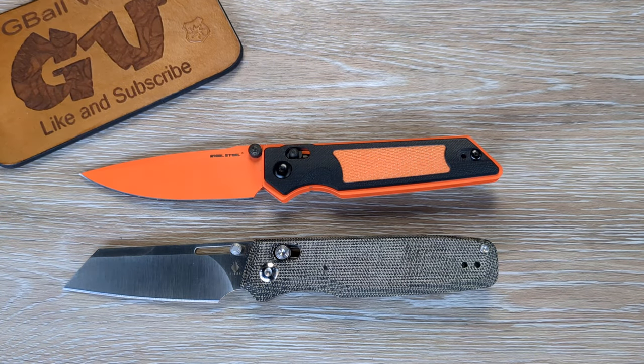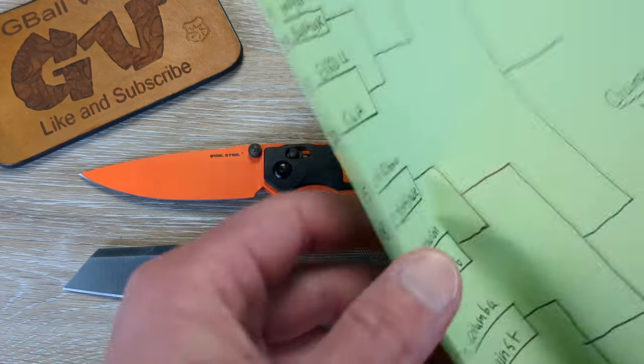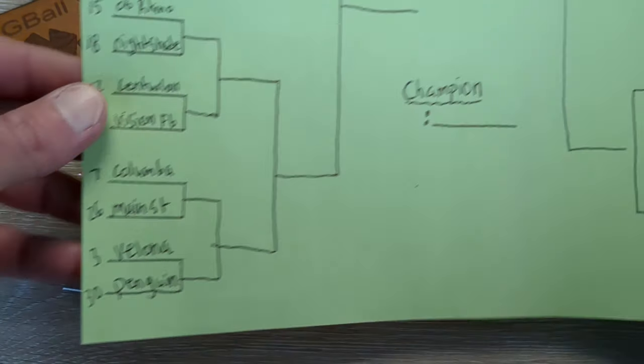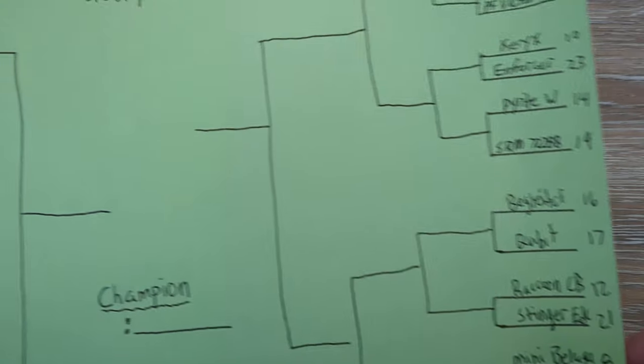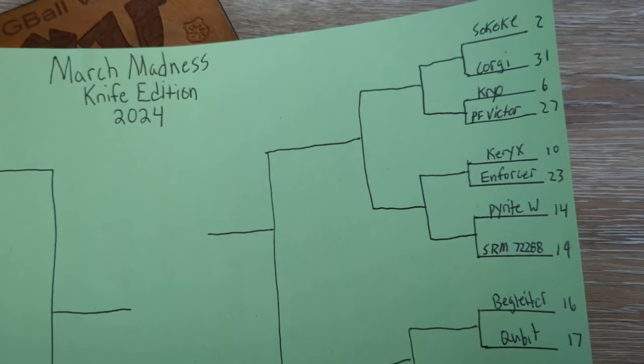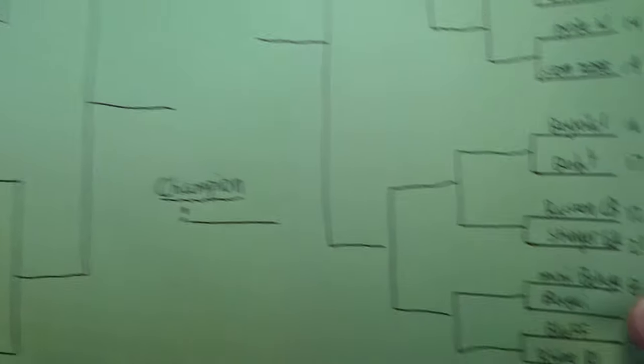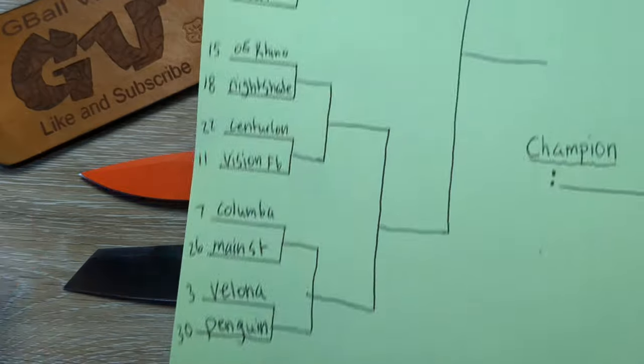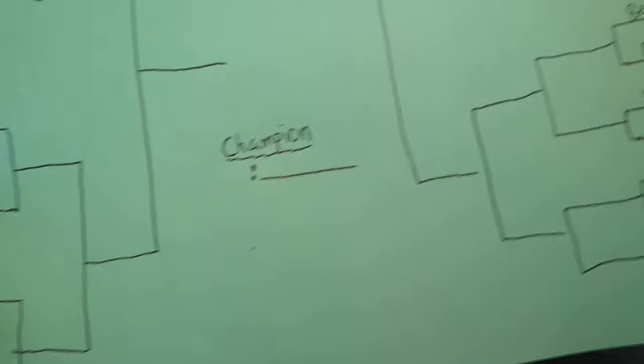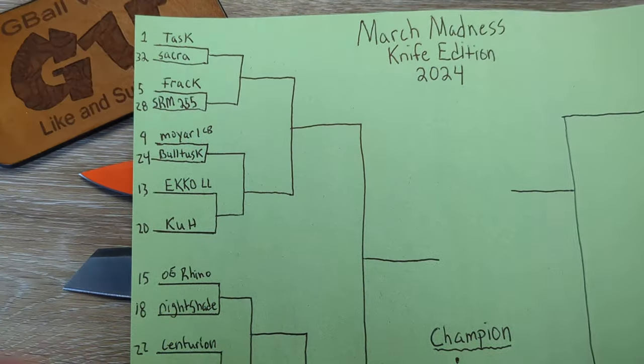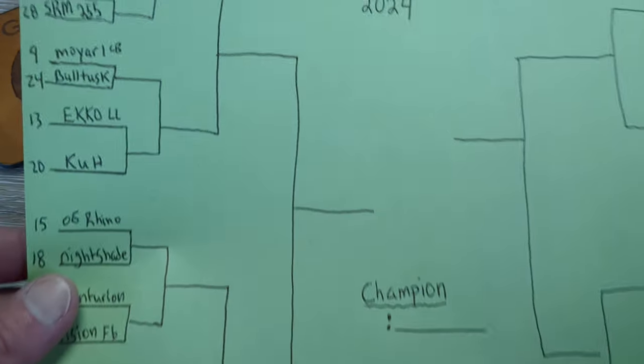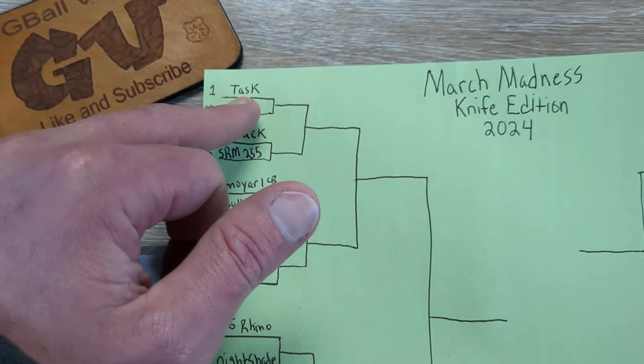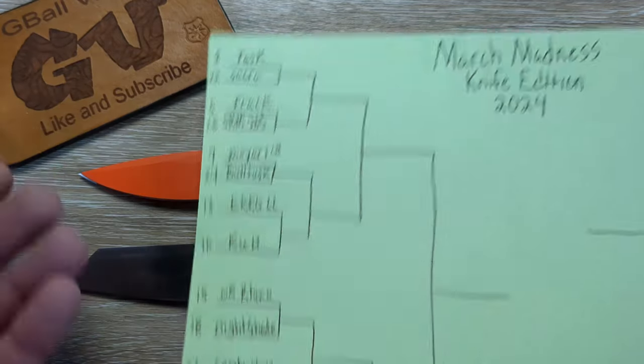Now with all that being said, I will bring out the bracket and I also have some rules that we can cover. I posted a community tab picture of the entire playoff. But if you want to pause and read, there are all of the first round matchups. Now we do have 1 through 32 guys. And to be honest with you, these are basically just numbers so that we could keep track of each knife.